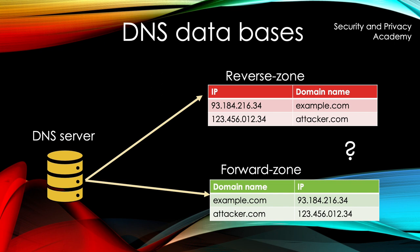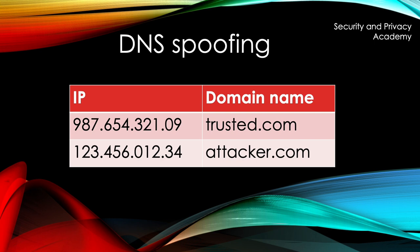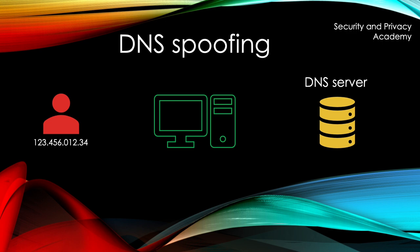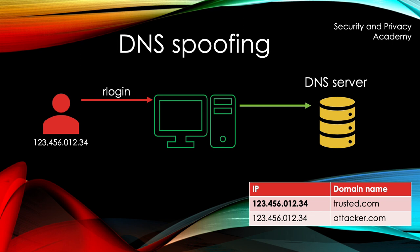DNS spoofing works if the attacker is able to change an entry in the reverse zone table of a DNS server. Let's assume he manages to change a trusted host's IP address to his own. He can now start a remote login session on a person's PC using his IP address. The PC will ask the DNS server to resolve this address to a domain name to check whether this is a trusted name. The DNS server looks into its reverse zone table and responds with the trusted domain name, and the PC will grant remote access to the attacker. If the entries of the forward zone table are also checked, this attack is no longer possible.